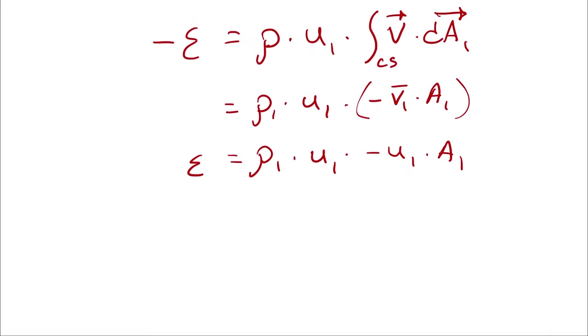And at this point, I have negative epsilon is equal to negative density 1 times u1 squared times A1.